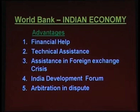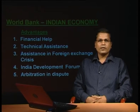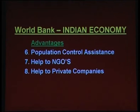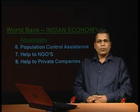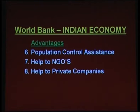The India Development Forum has already been discussed in achievements of World Bank. Arbitration in disputes has also been a great help for India — in the dispute of water distribution with Pakistan, World Bank played the role of arbitrator and provided assistance to both governments in resolving the issues. Other advantages include population control assistance, help to NGOs, and help to private companies. World Bank provided major funds for India's population control programs, as well as for programs like polio, malaria, and tuberculosis. World Bank has also provided financial assistance to Indian Airlines, Steel Authority of India Limited, and Tata Steel for various plants and expansions.